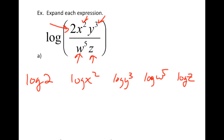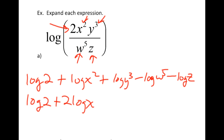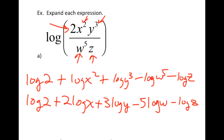Now I'm going to assign positives and negatives. The 2 is on the top, so it gets a positive log. The x is on the top, so it gets a positive log. The y gets a positive log. The w is on the bottom so it gets a negative logarithm, and the z is on the bottom so it gets a negative log. Now, any arguments with exponents need those exponents moved to the front. Common log of 2 doesn't change. Then I get 2 common log of x, plus 3 common log of y, minus 5 common log of w, minus common log of z. And I've expanded this to its utmost.